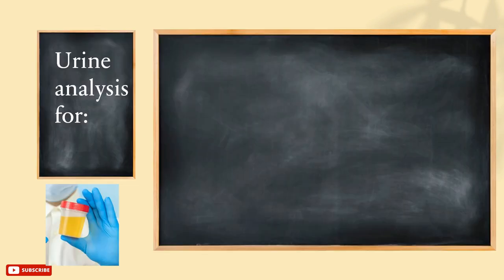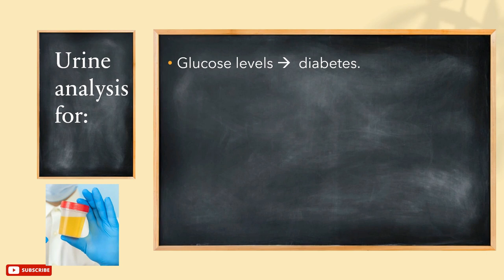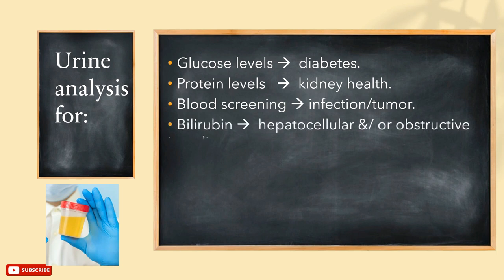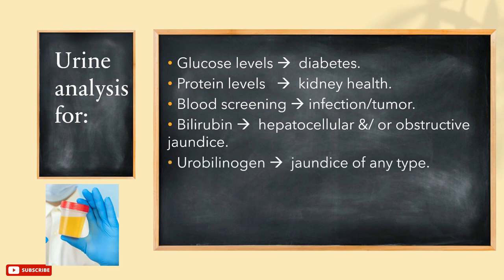Starting with urine analysis. It is important for measuring the levels of glucose for diabetes diagnosis, for protein levels to investigate kidney health and function, as a blood screening to see if there is any infection or tumors, and to measure the levels of bilirubin for diagnosis of hepatocellular or obstructive jaundice, and the levels of urobilinogen to diagnose jaundice of any type.